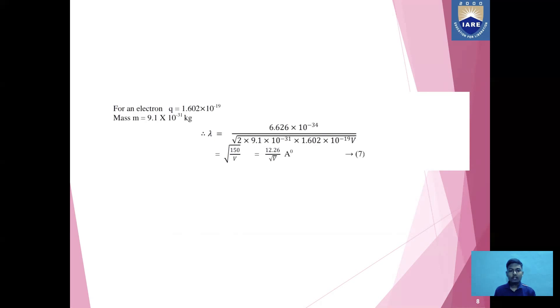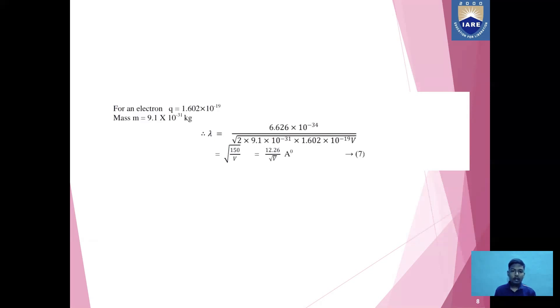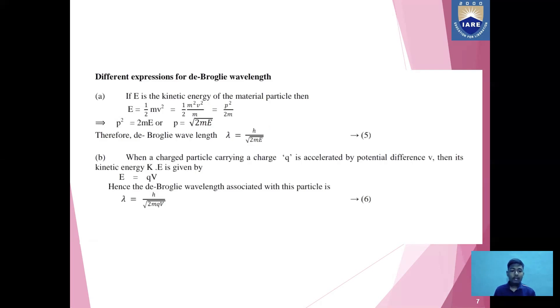As we know, the charge of an electron is 1.602 × 10⁻¹⁹ C and the mass of an electron is 9.1 × 10⁻³¹ kg. When we substitute these values in the equation λ = h/√(2mqV), we get λ = 6.626 × 10⁻³⁴ / √(2 × 9.1 × 10⁻³¹ × 1.602 × 10⁻¹⁹ × V), which simplifies to λ = √(1/150 × 1/V), where V is the potential difference applied to accelerate the charge.